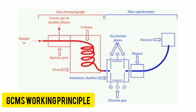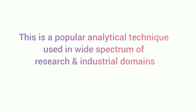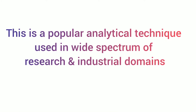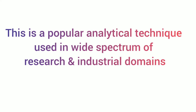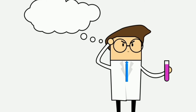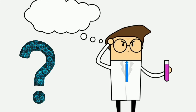The MS detects the compounds based on their molecular mass. GC-MS technique provides highly sensitive and precise identification of compounds present in the sample within a short period. This is a popular analytical technique used in a wide spectrum of research and industrial domains.